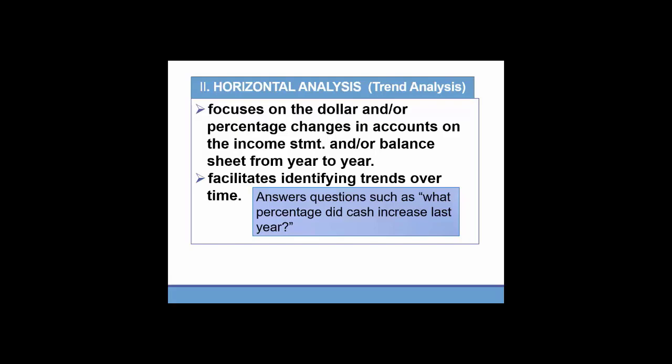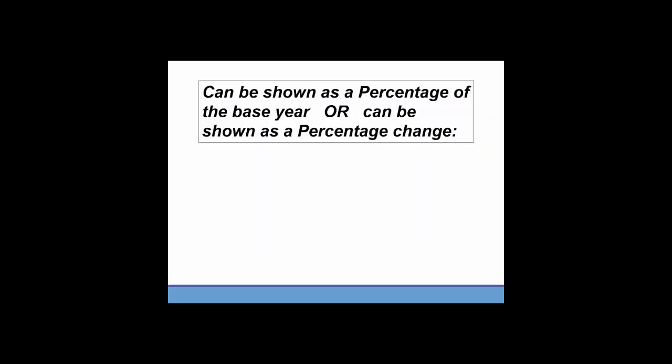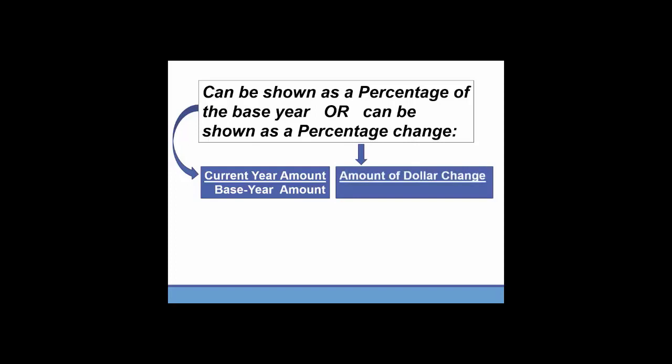Alright, let's take a look at Aggie's financial statements. Before we do, I should say that there are really two ways of looking at this horizontal analysis. The first way is to show this as a percentage of the base year. You'll take the current year amount divided by the base year amount. So write this formula down. The other way is you can take the dollar change in that account and divide by the base year amount. It's important to note that the base year is typically the first year given, the earliest year shown.